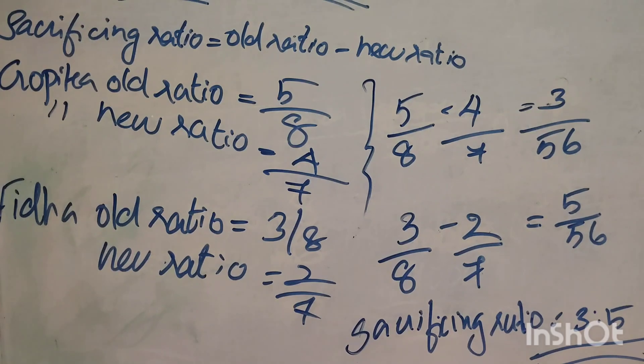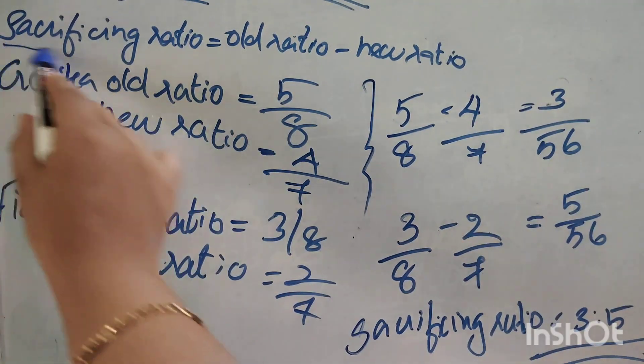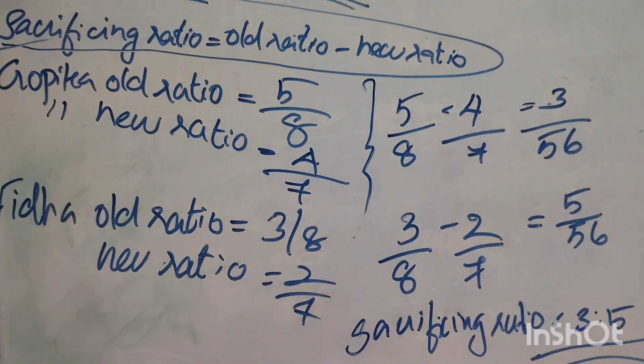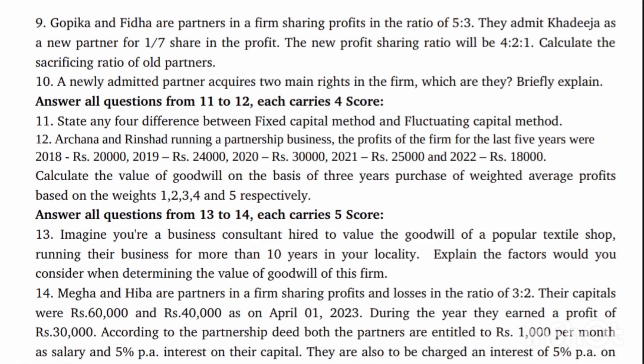So the sacrificing ratio of Gobika to Fida is 3:5, which is calculated as old ratio minus new ratio. Tenth question: A newly admitted partner acquires two main rights in the firm — the right to share the assets of the firm, and the right to share the profit of the firm.